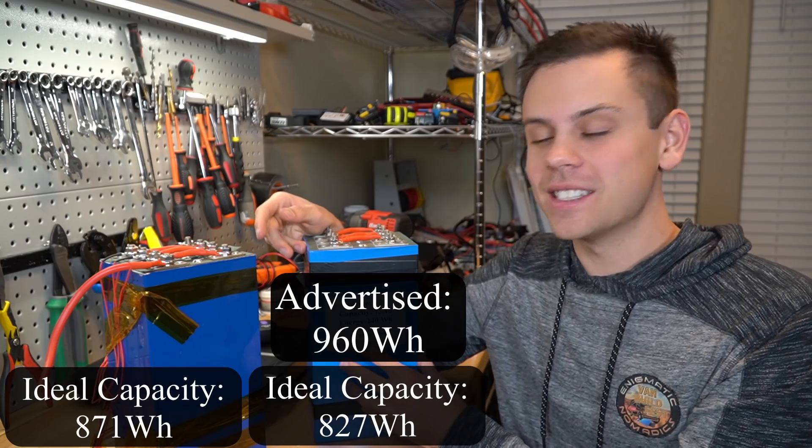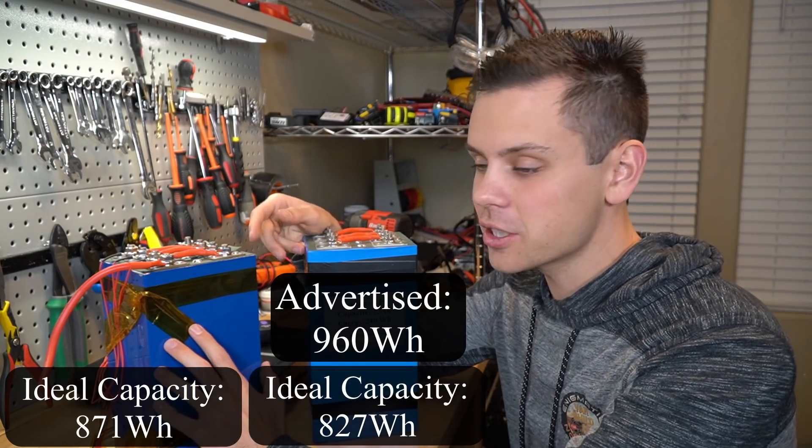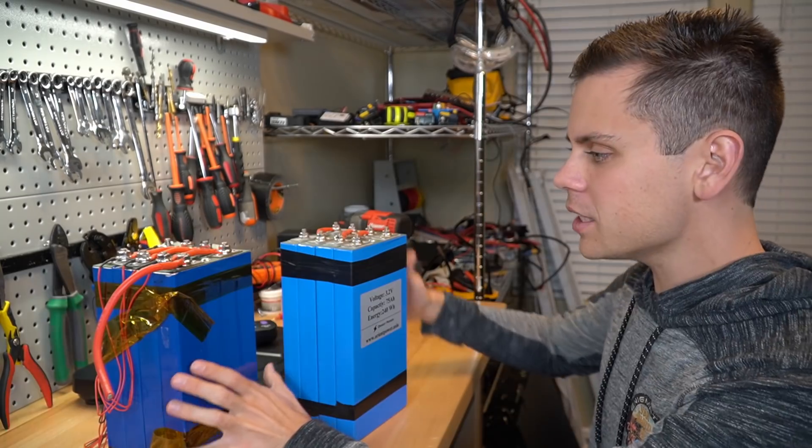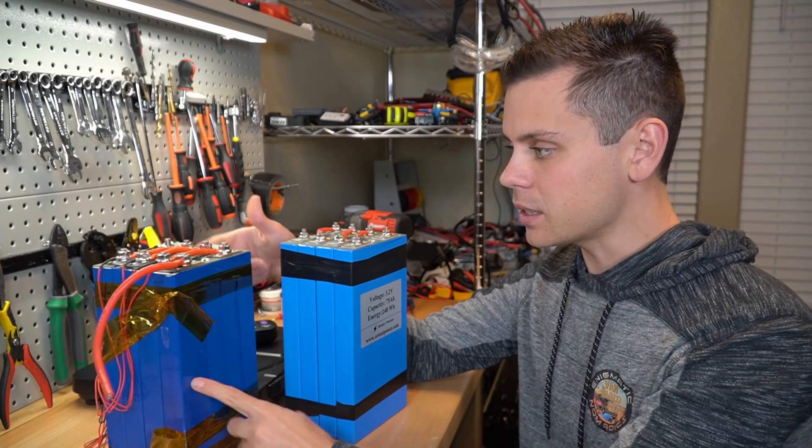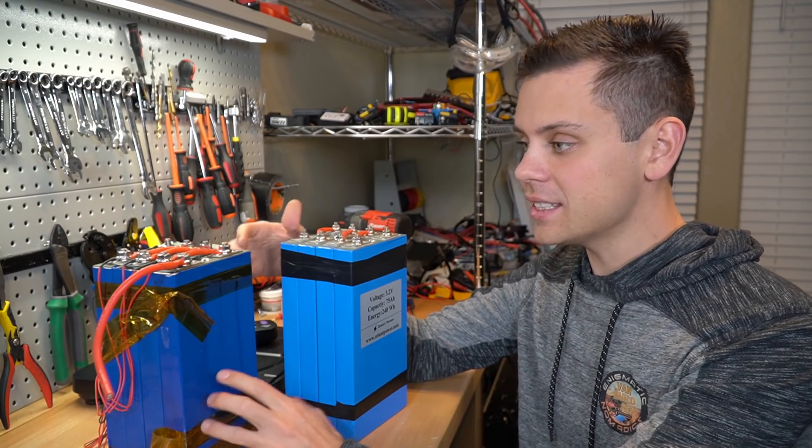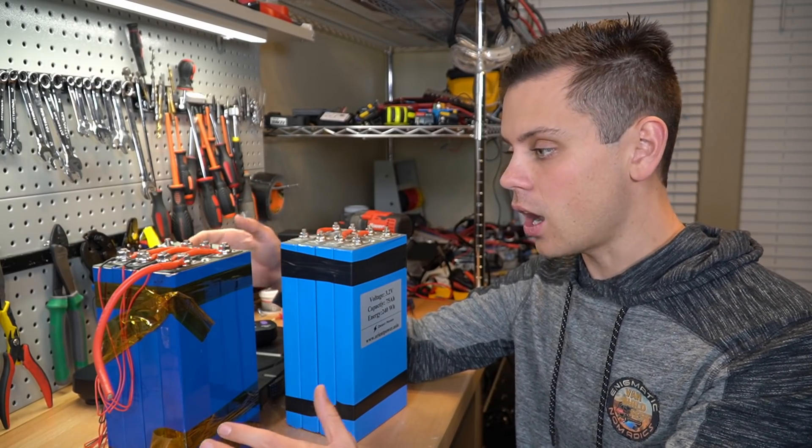This one is rated for 960 watt hours. And this one is rated for 1280 watt hours. And if these are actually true capacity, that means that some of these aluminum-cased lithium iron phosphate cells have insane energy density. They are off the charts.